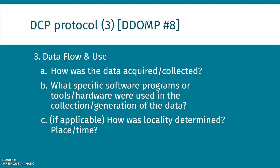For the data curation profile protocol question number three about data flow and use, this maps really well to the DDOMP number eight. How was the data acquired and collected? What specific software programs, tools, or hardware were used in the collection and generation of the data? How was locality determined? Sometimes the geospatial components are very important — the place and time. And what is the accuracy and precision of that data? Those things will matter and impact the fitness of reuse.